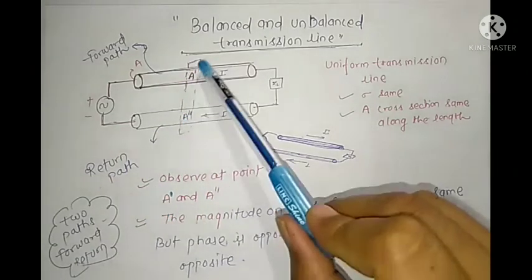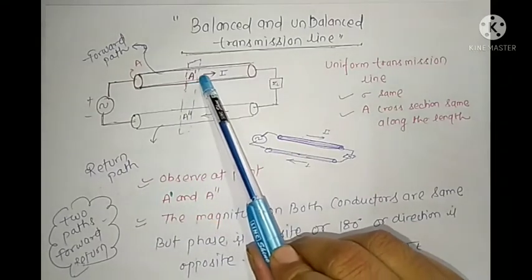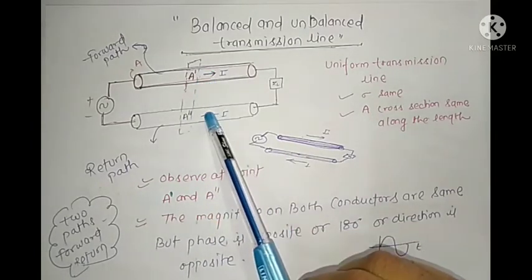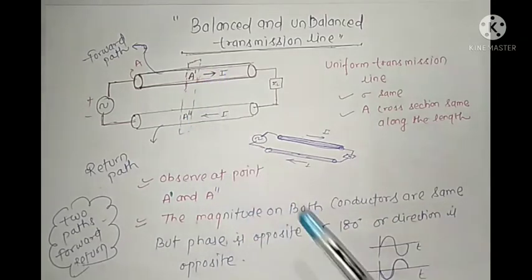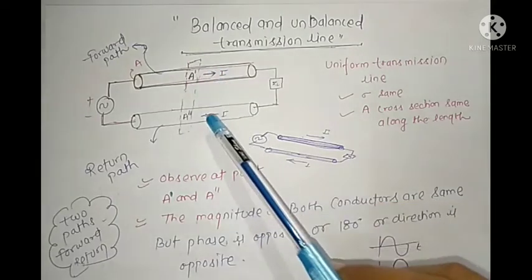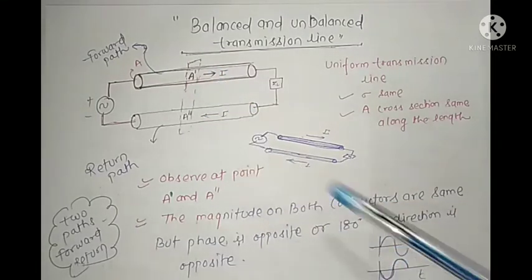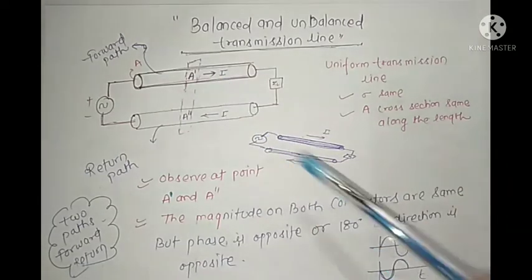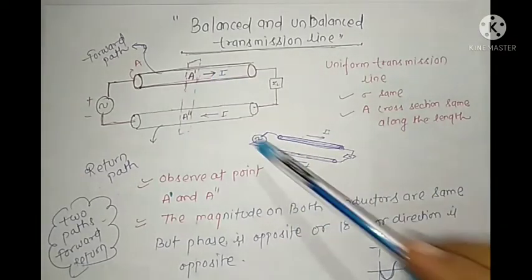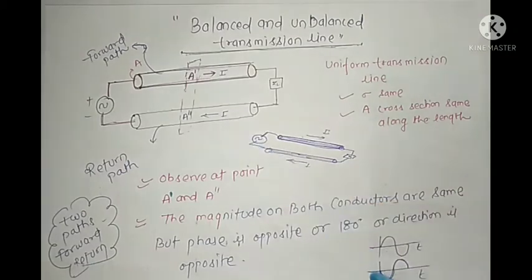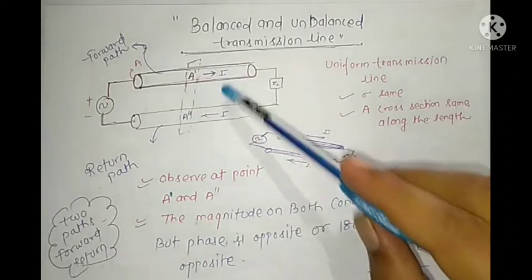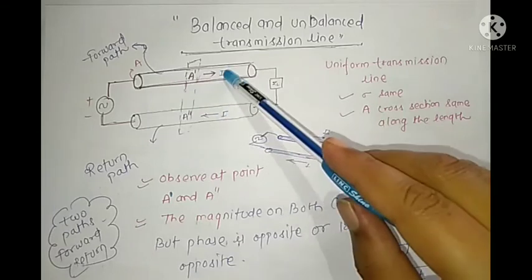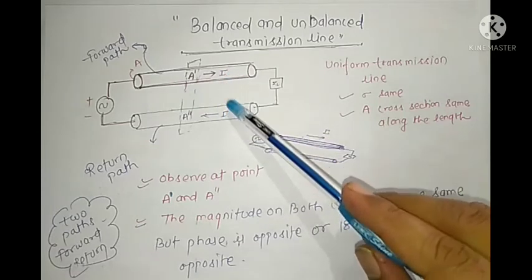Observe the value of current and direction at points A, A-dash, and A-double-dash. You can see the magnitude of both currents is the same, but the direction is opposite - meaning they are opposite in phase. If the forward current flows in one direction, the backward current will be opposite in phase. The geometry of both conductors is similar since both have the same cross-sectional area along their length.